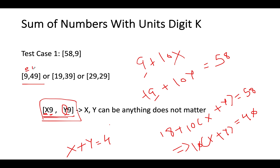The next possibility is x=1, y=3, and the third is x=2, y=2. In this example, we assumed there were only two numbers summing to 58 with 9 at the unit place. But how can we be sure of the number of integers that would sum to give the desired result? Let's try to derive the mathematical formula for it.